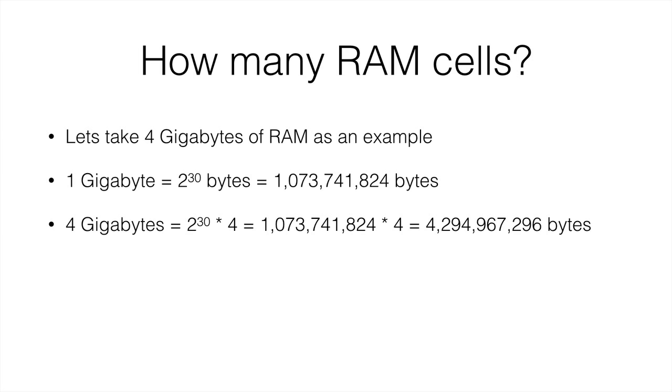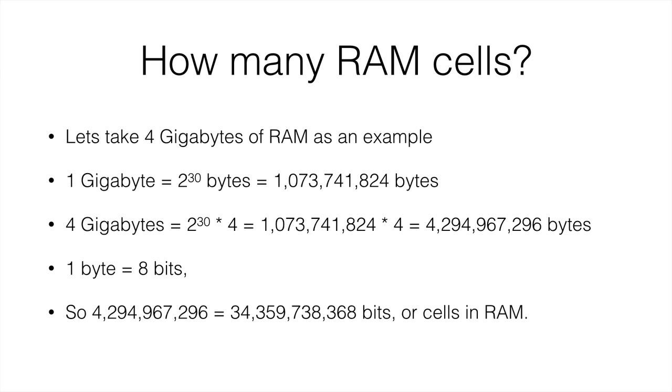Remember, 1 byte is 8 bits. So we still have to multiply this number by 8 to get the number of bits. Because one cell in the RAM stores 1 bit, this number of bits is the number of cells we have in RAM, which is 34 billion cells. 34.5 billion cells. It is a lot of cells.